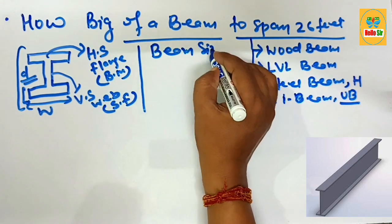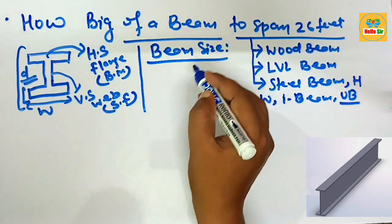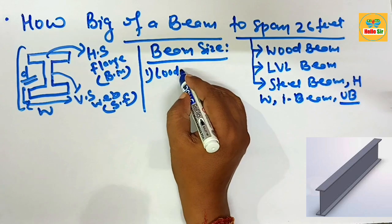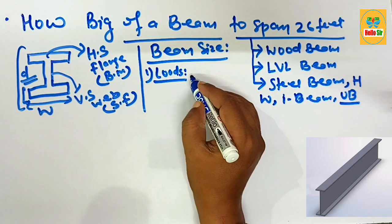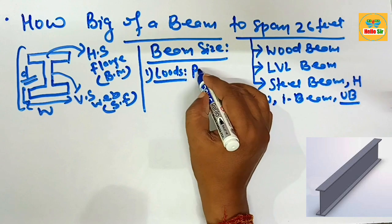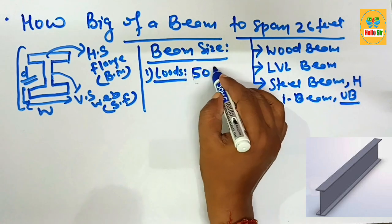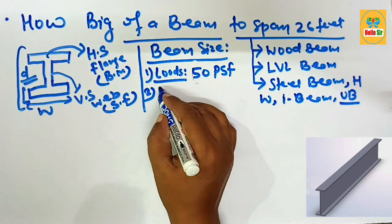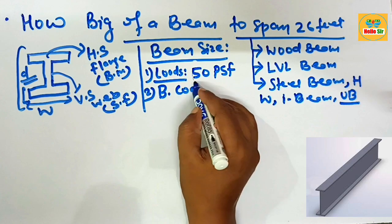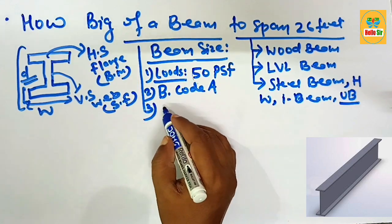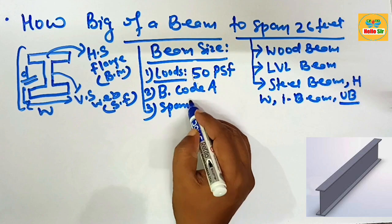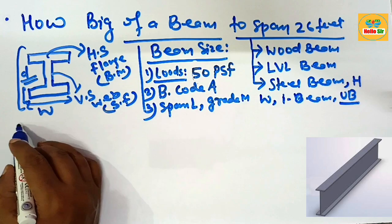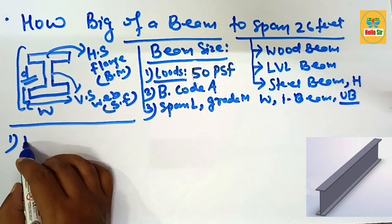The beam size depends on many factors. The first is the load acting on the structure — imposed load and dead load — which may be around 50 pounds per square foot for residential purposes. The second major factor is the building code in your area. The third factor is the span length of the beam and the grade of material. These factors decide the beam size.